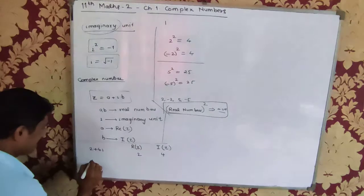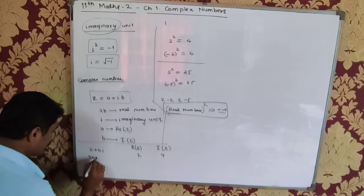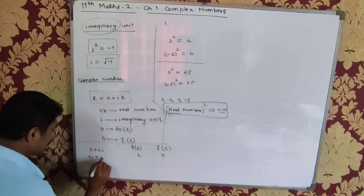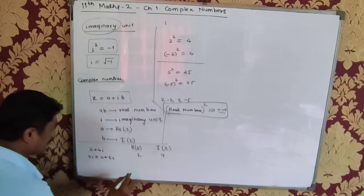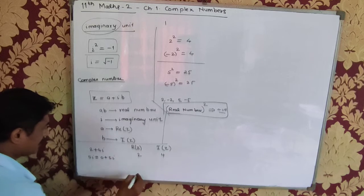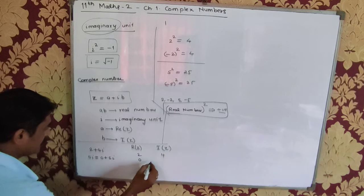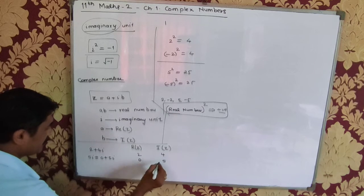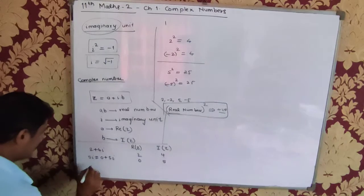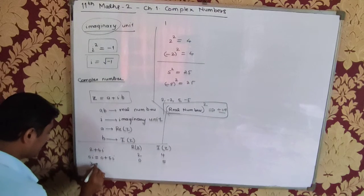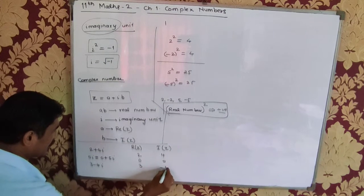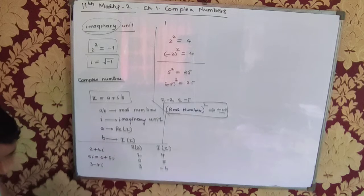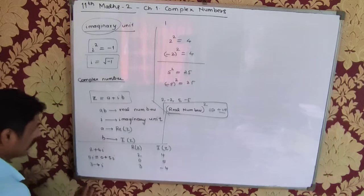I consider the next one: 5i. I will view it as 0 + 5i. So the real part is 0 and the imaginary part is 5. Next: 3 − 4i. Here, 3 is the real part and −4 is the imaginary part.